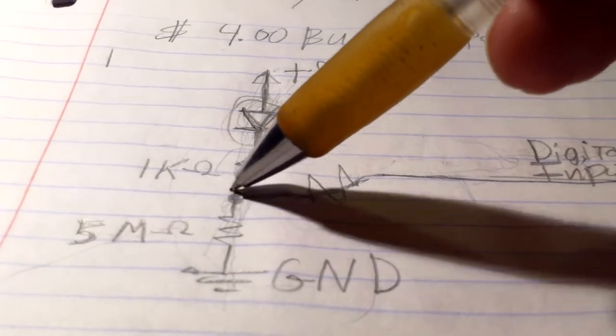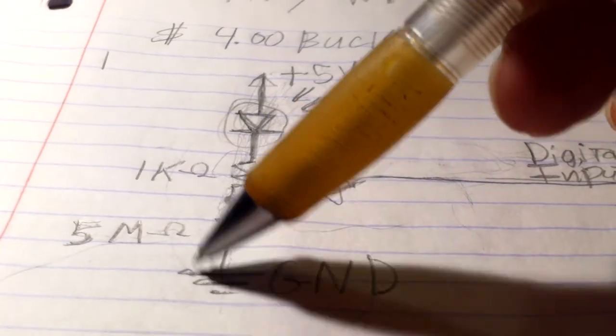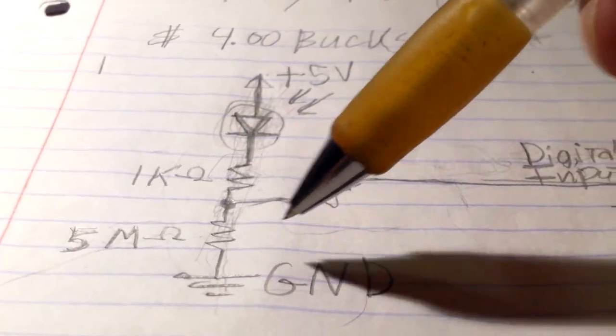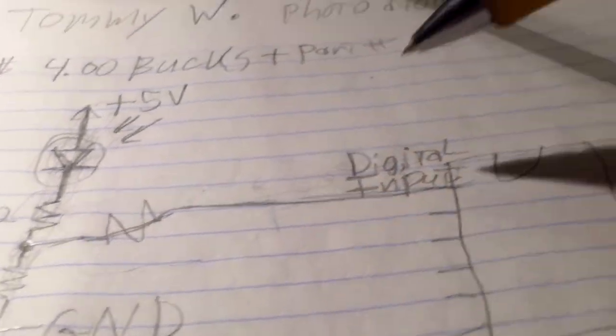And then from this point, you just go down and there's our 5 mega ohm resistor and then to ground.